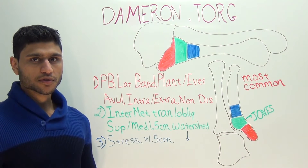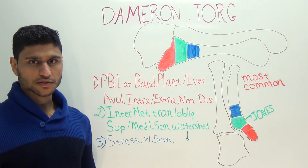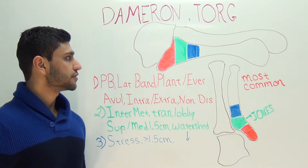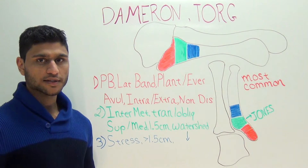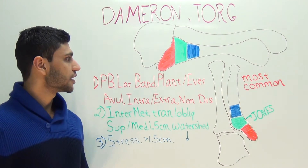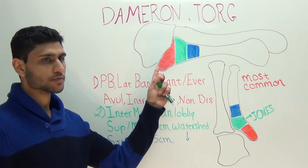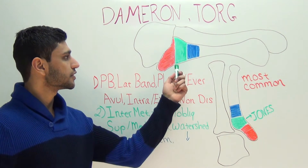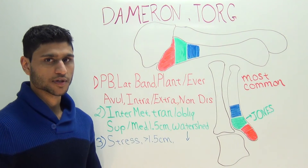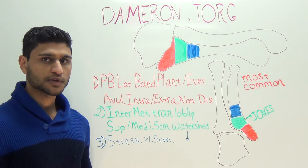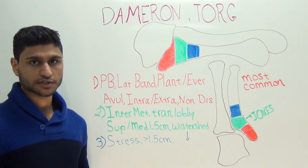The Dameron and Torr classifications describe fractures that occur at the proximal aspect of the fifth metatarsal. Dameron divides the base into three anatomical zones. The first zone is the most proximal aspect of the tuberosity, or styloid process. Zone 2 is the distal aspect of the tuberosity, and zone 3 is the most proximal aspect of the diaphysis, or shaft.